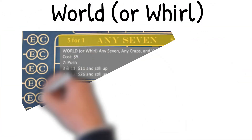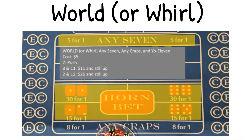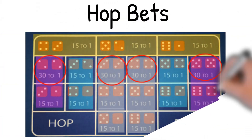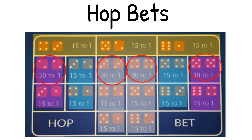World or Whirl combines any seven, any craps, and yo-eleven. It costs five dollars. If the seven is rolled, it's a push. If three or eleven is rolled, it pays eleven dollars and you're still up. Two and twelve pays twenty-six dollars and you're still up.